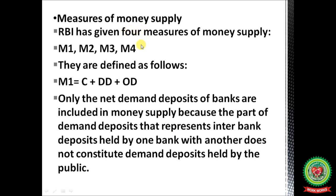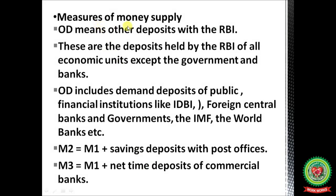Measures of money supply: RBI has given four measures — M1, M2, M3, and M4. M1 = total money in circulation + demand deposits (savings accounts and current accounts) + other deposits with RBI. Only net demand deposits of banks are included in money supply, because interbank deposits held by one bank with another do not constitute demand deposits held by the public.